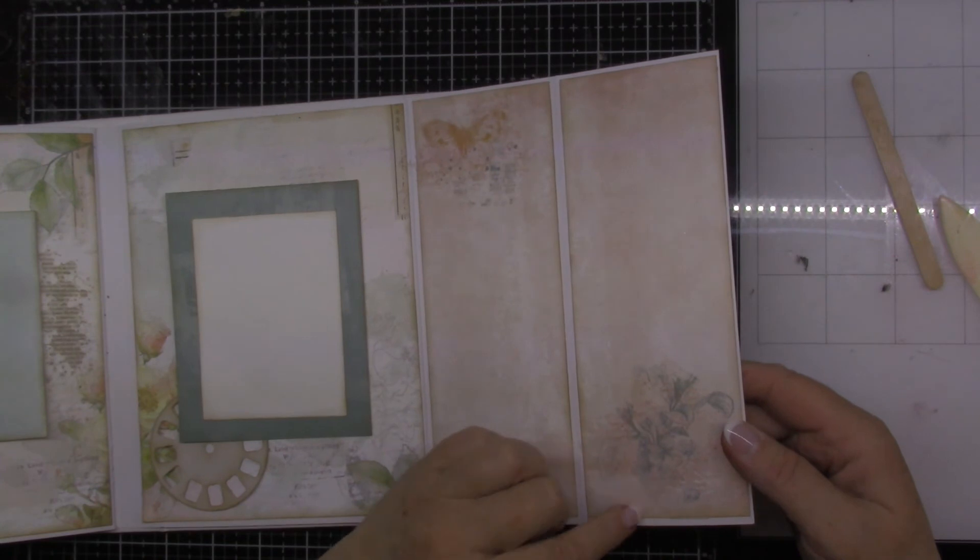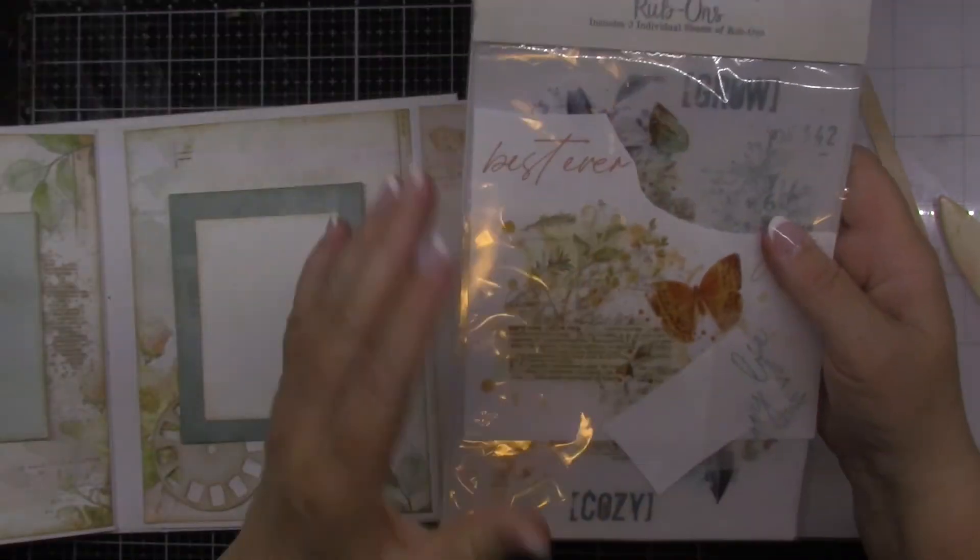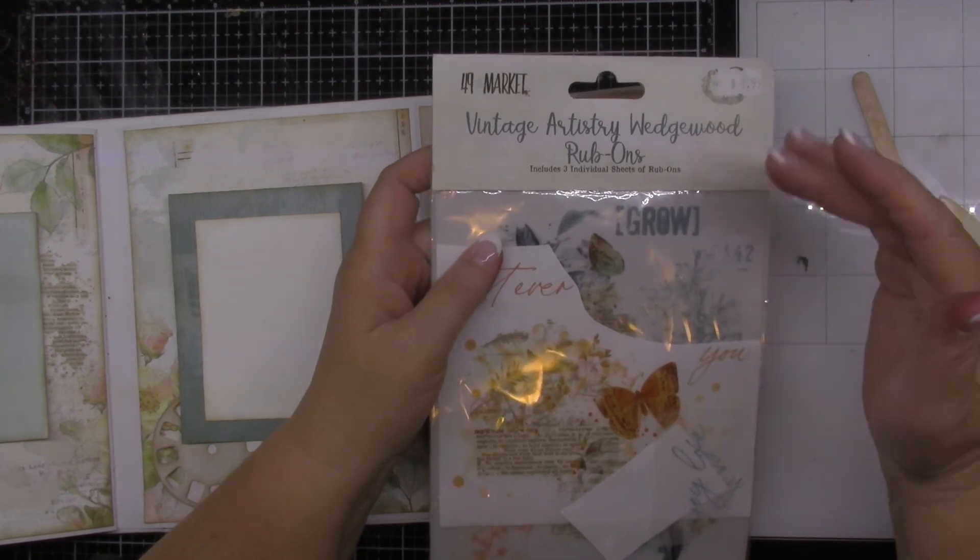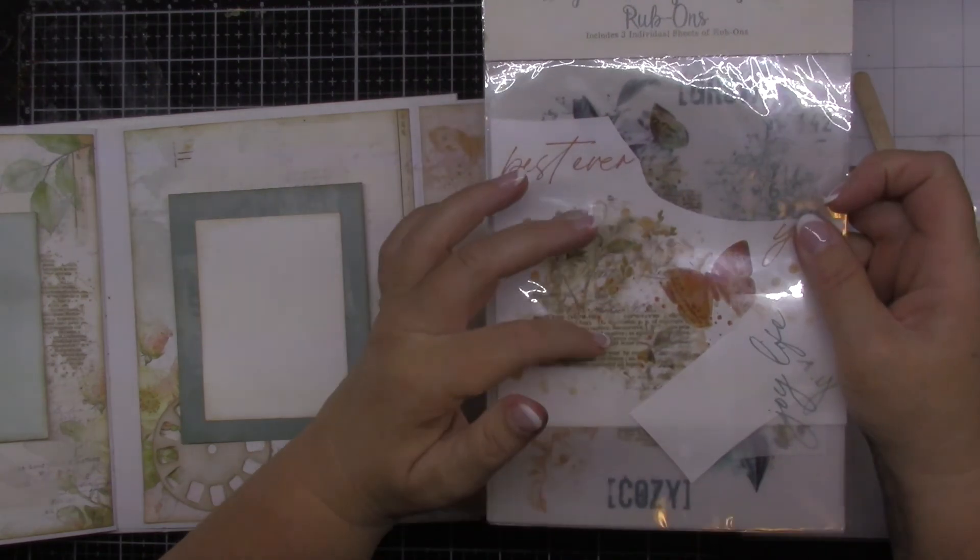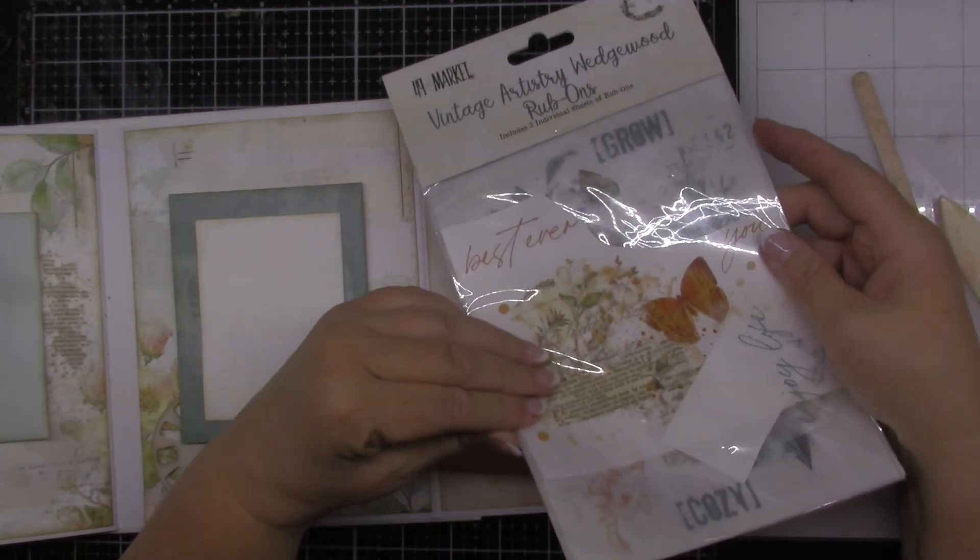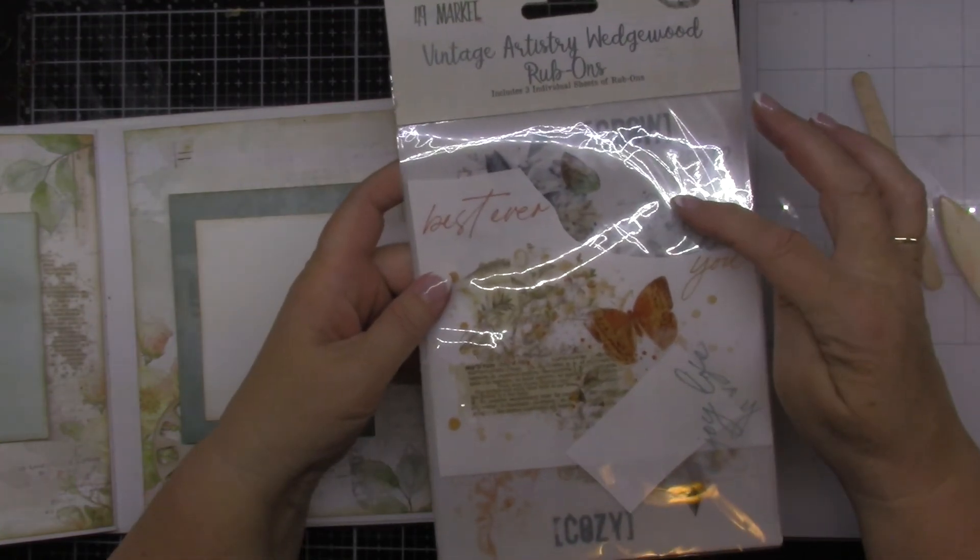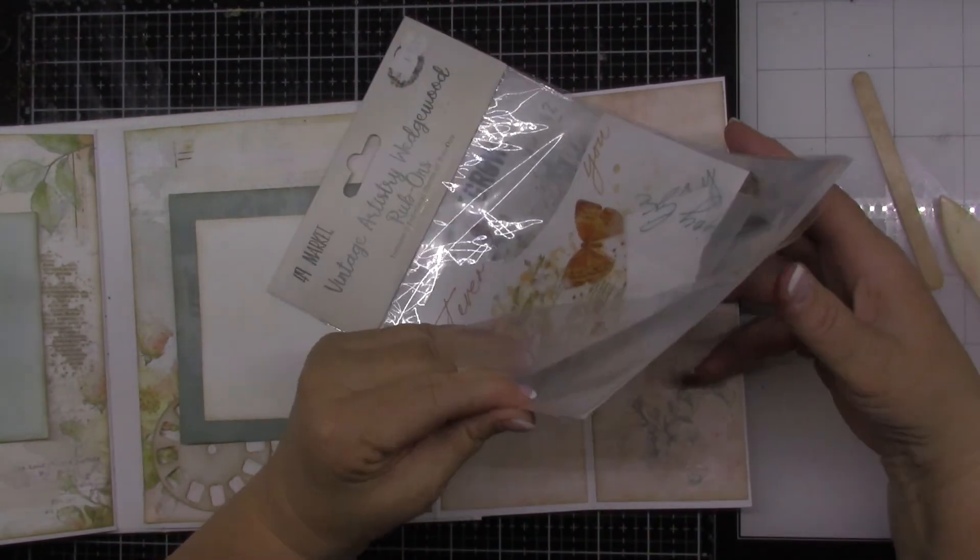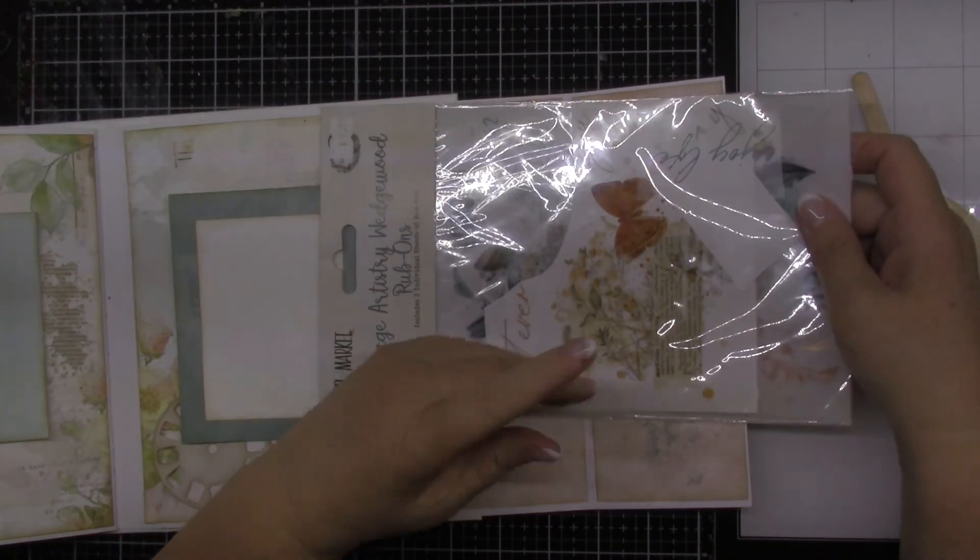So that has added in some nice mixed media look - it looks like I splashed some paint on there and really it's just a rub-on. So I hope you give those a try. We are carrying the 49th and Market - all of their new lines are just gorgeous: the paper, the paper pads, the die cuts, the stitched frames, all of it. I'm just loving it. But do give a try to their rub-ons. They have so many different colors and different designs. Generally their packages come with kind of two different colors per package, so this has got that nice wedgewood blue and the orange rusty color in it. The other packages have their own colors in them as well. I hope you give those a try - very easy to use.